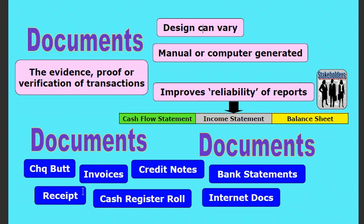Here are the major documents: check butts, invoices, credit notes, bank statements, internet documents, cash register rolls, receipts. There are many others. But they all provide documentary evidence or proof or verification that the transaction actually occurred, and it means that the stakeholders can rely on the information contained in the three major reports — the cash flow statement, the income statement, and the balance sheet.